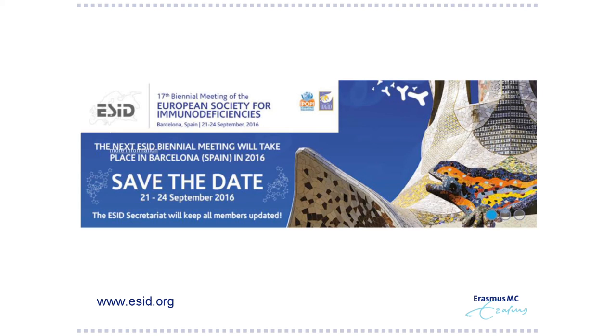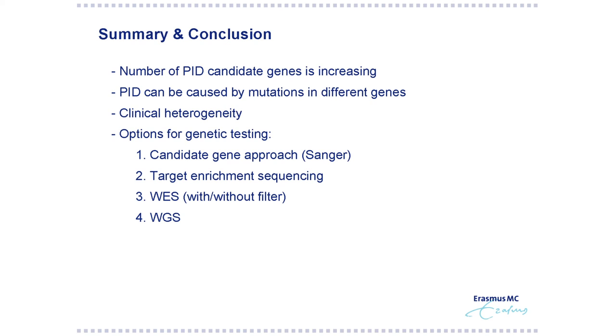All these strategies will also be discussed during the ACID meeting next year in Barcelona. There will be a session on genetic testing organized by the working group on genetics, and new genes that have been identified will also be presented. In conclusion, the number of PID candidate genes is really increasing, and I expect it will still increase in the coming years. It's important to realize that one PID can be caused by mutations in different genes, and there is a lot of clinical heterogeneity.